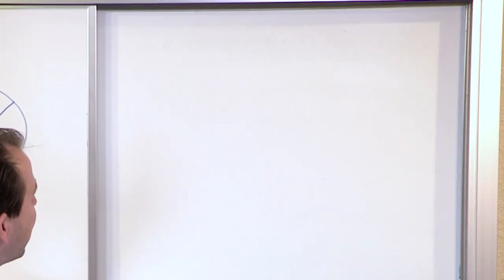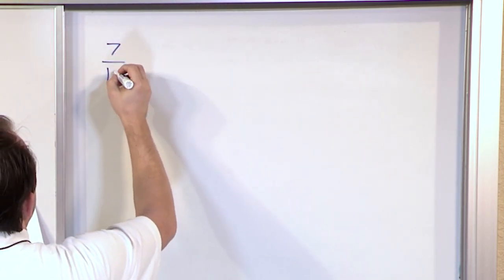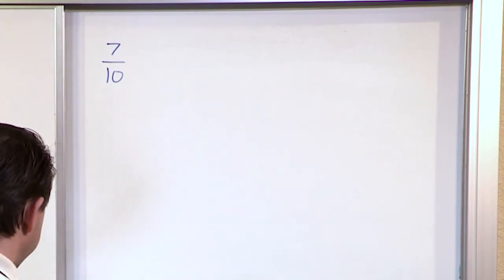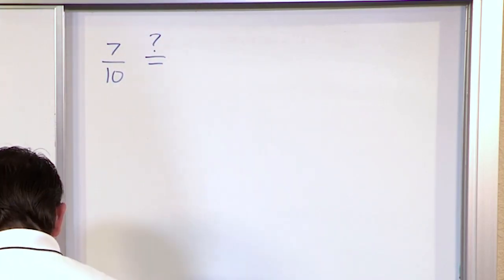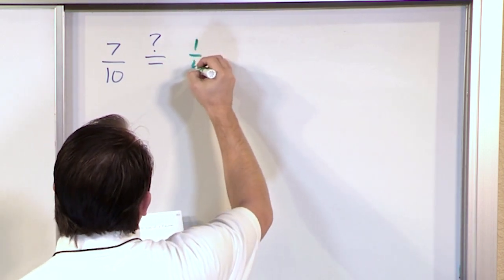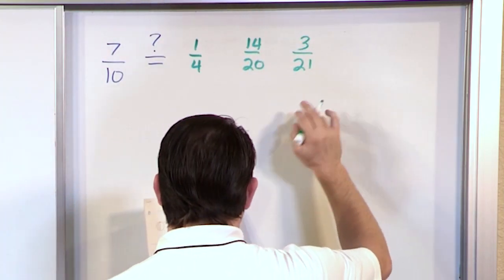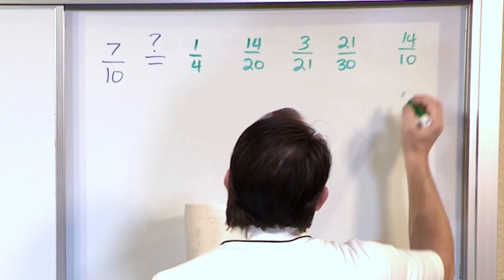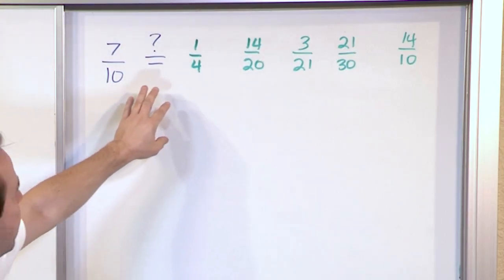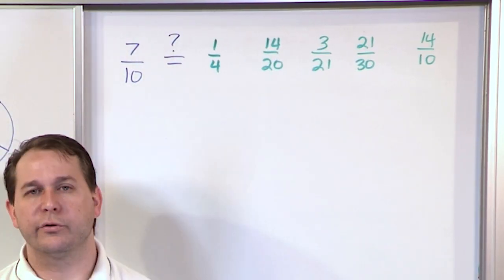Now I want to give you a little practice with equivalent fractions. Let's say we have the fraction 7 tenths — I cut a pizza into 10 pieces and only take 7. And we have some choices: one fourth, 14 twentieths, 3 twenty-firsts, 21 thirtieths, and 14 tenths. We want to circle the fraction that's equivalent to 7 tenths. All of these fractions look totally different than 7 tenths, but one of them is actually equivalent.